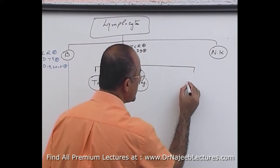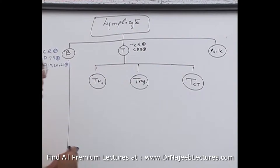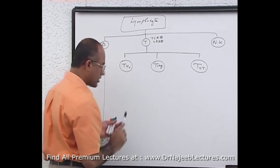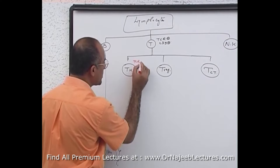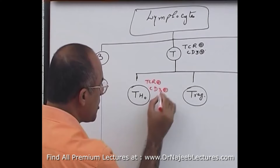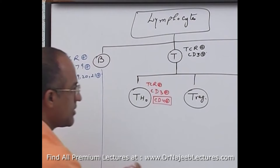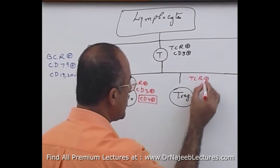All of these T cell subtypes are TCR positive and CD3 positive. The special thing about T helper cells is that they are not only TCR positive and CD3 positive, but especially they are CD4 positive.